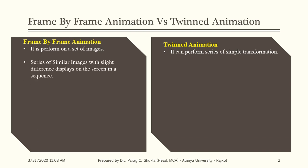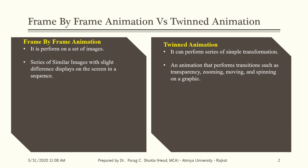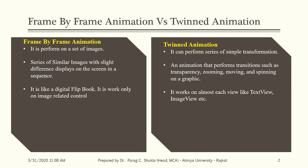Frame-by-frame animation is a series of similar images with slight differences displayed on the screen in a sequence. Tween animation performs transitions such as transparency, zooming, moving, and spinning on a graphic. Frame-by-frame animation is like a digital flipbook — it works only on image-related controls. Tween animation can work on almost any view: TextView, ImageView, Button, Layout — almost all views.